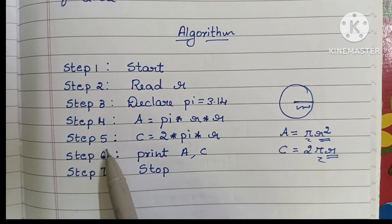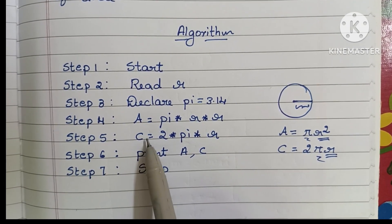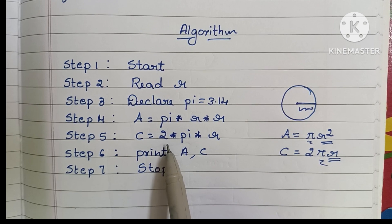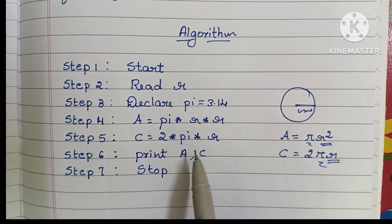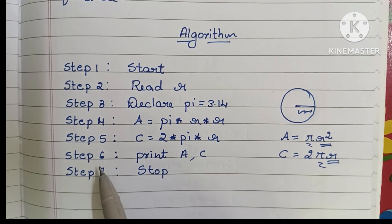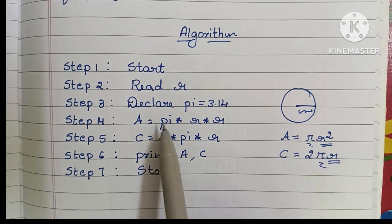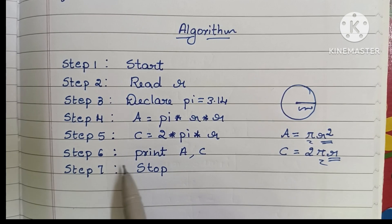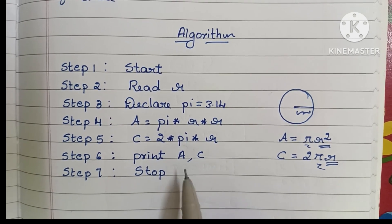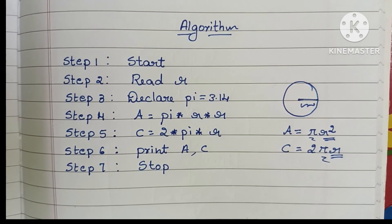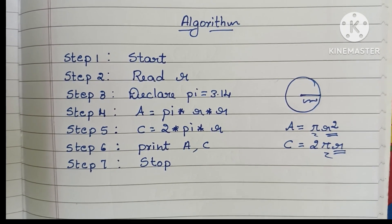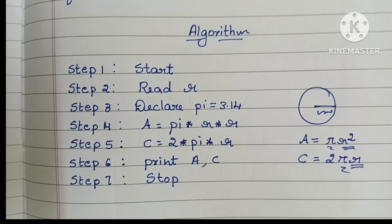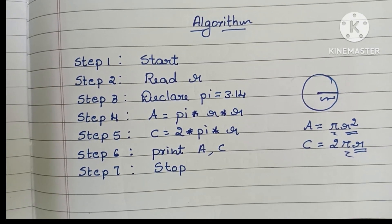Step 5: find circumference of circle — C is equal to 2 into pi into r. Step 6: print the area and circumference of circle, so write print A comma C. Step 7: stop the algorithm.